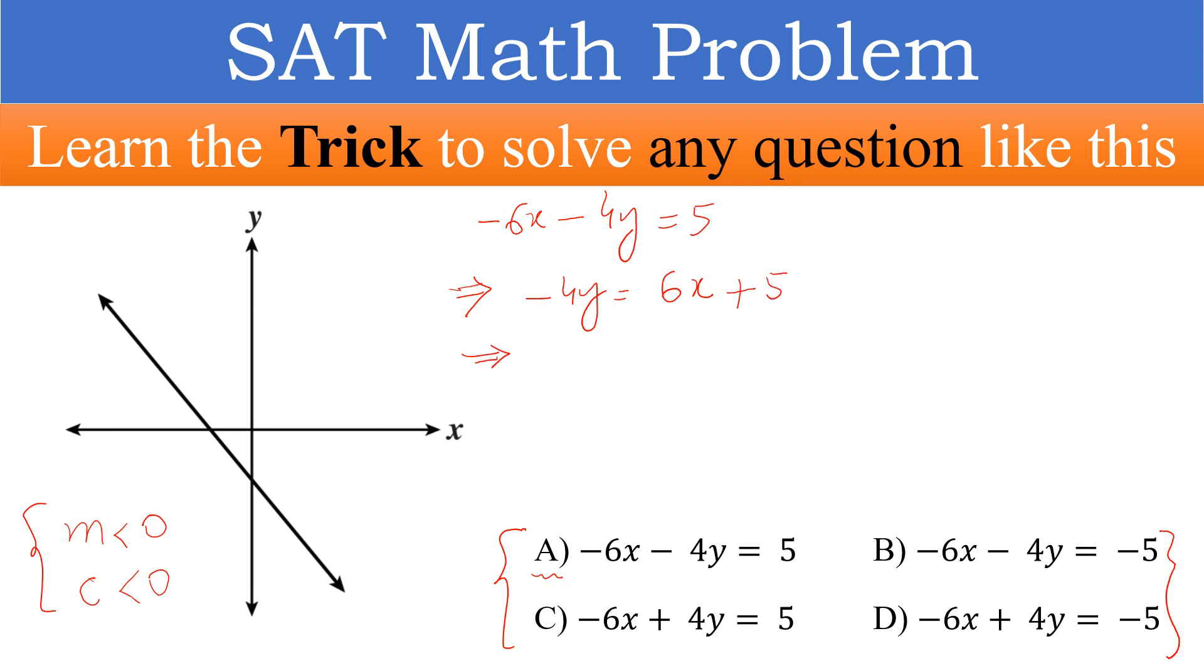Multiplying both sides by minus 1, we can write 4y is equal to minus 6x minus 5. Dividing both sides by 4, we can write y is equal to minus 6 by 4x minus 5 by 4.